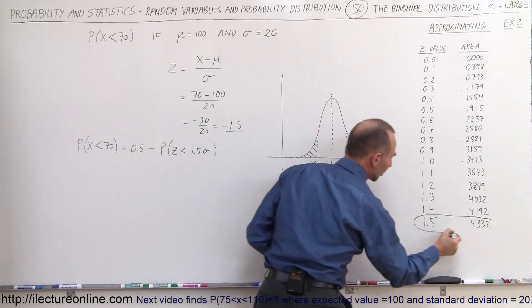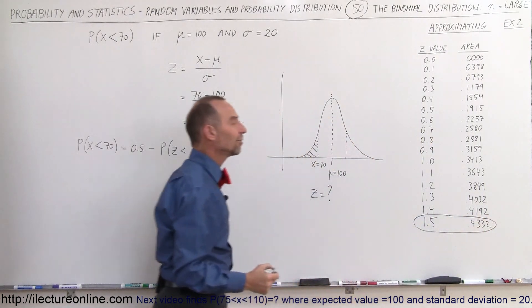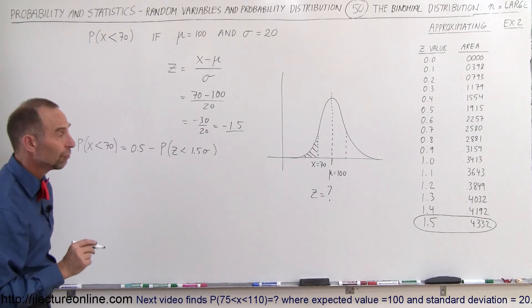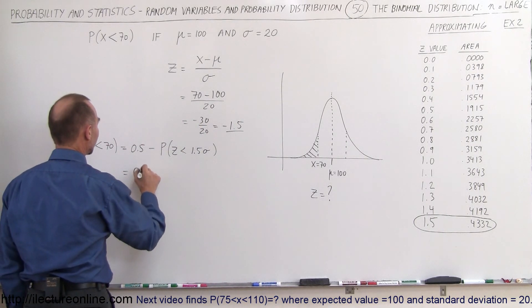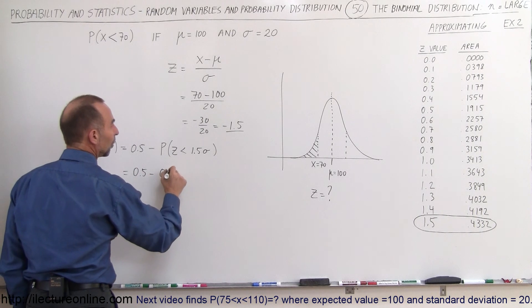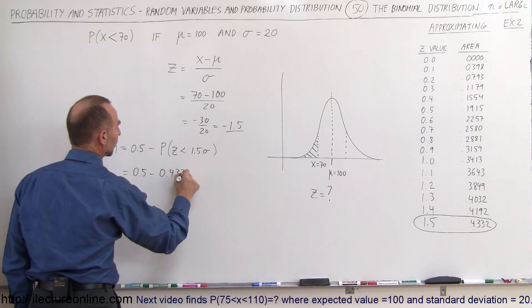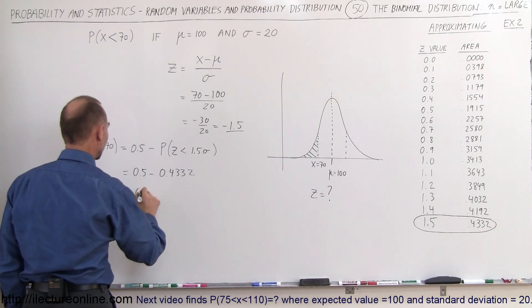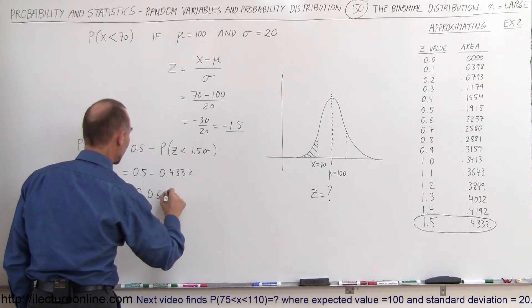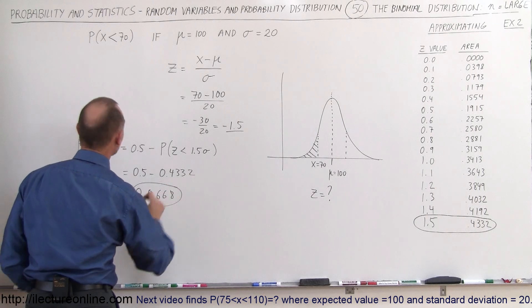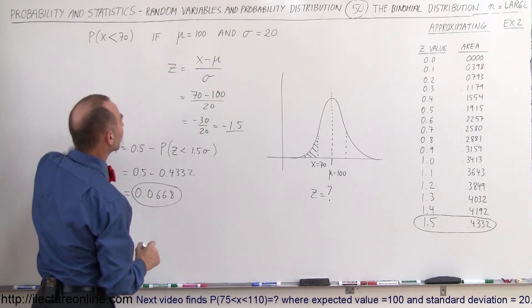So right here when z is equal to 1.5 times sigma, we know that that area is equal to 0.4332. So therefore this is equal to 0.5 minus 0.4332, which is equal to 0.0668. And that would be the probability that x value would be less than 70.